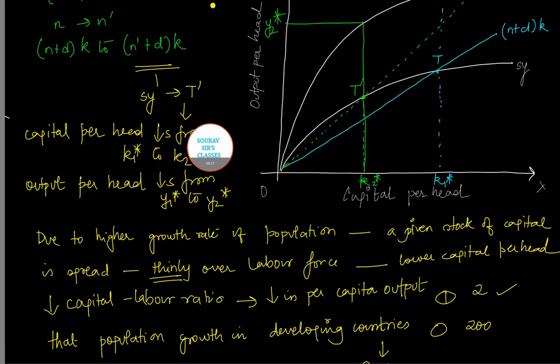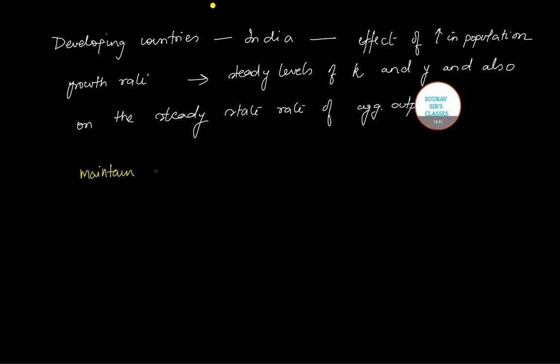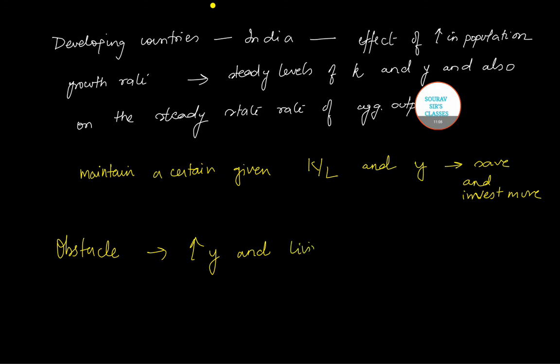A higher steady state growth rate is not desirable. As a matter of fact, what we can say is a higher steady state growth means that to maintain a certain given capital labor ratio and per capita income of the economy, the economy has to actually save and invest more. What does this imply? It actually implies that a higher rate of population acts as an obstacle to raise per capita income and therefore living standard of the people.